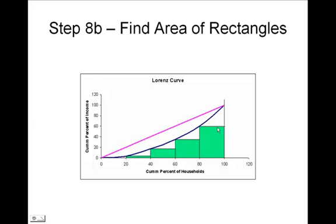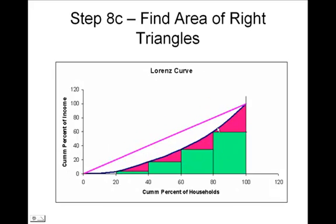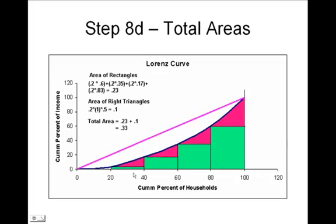Finally, I now have the area of each of the right triangles to calculate, and that total area equals the area of the rectangles, which is 0.23, plus the area of the right triangles, of which there are five, which adds up to 0.1. So the total area adds up to 0.33.